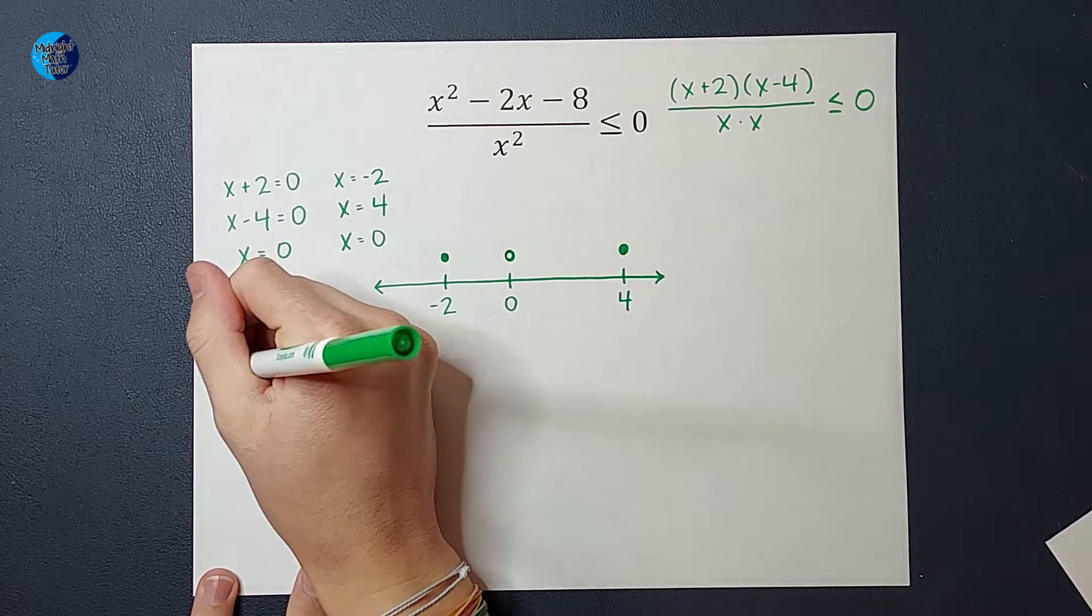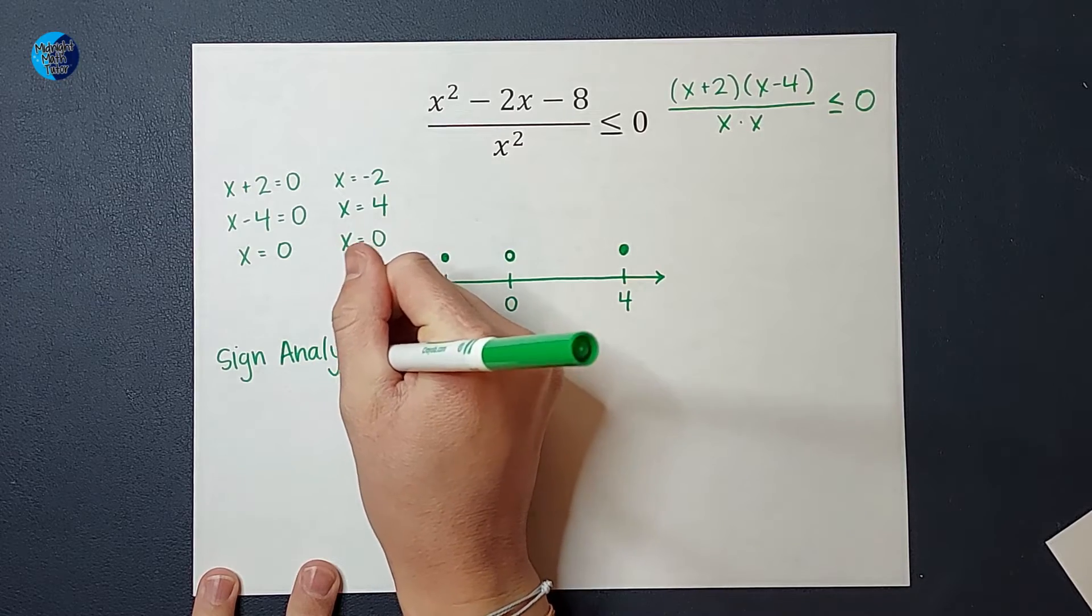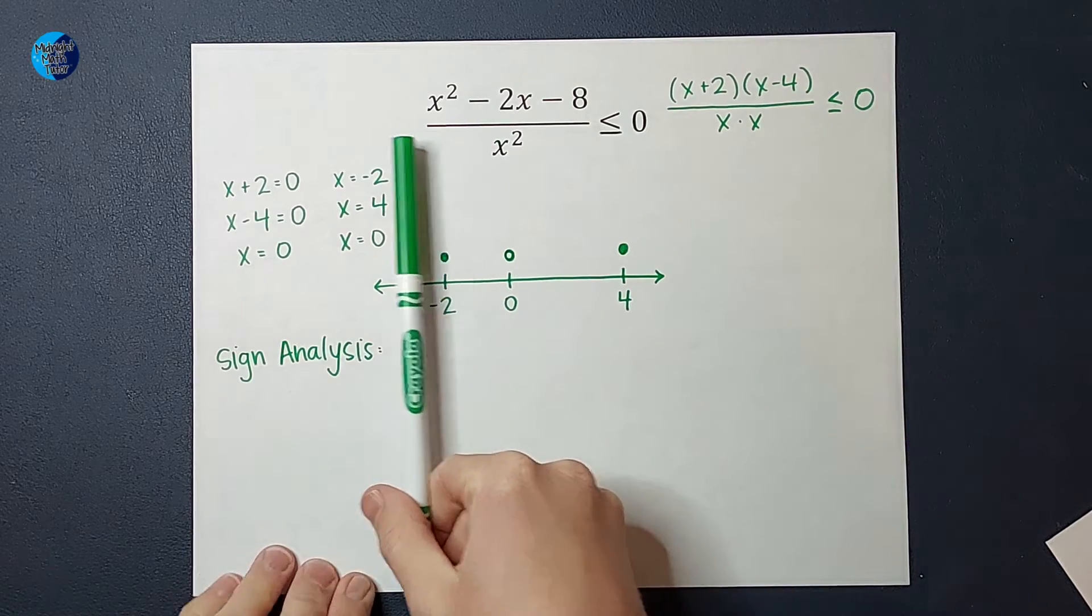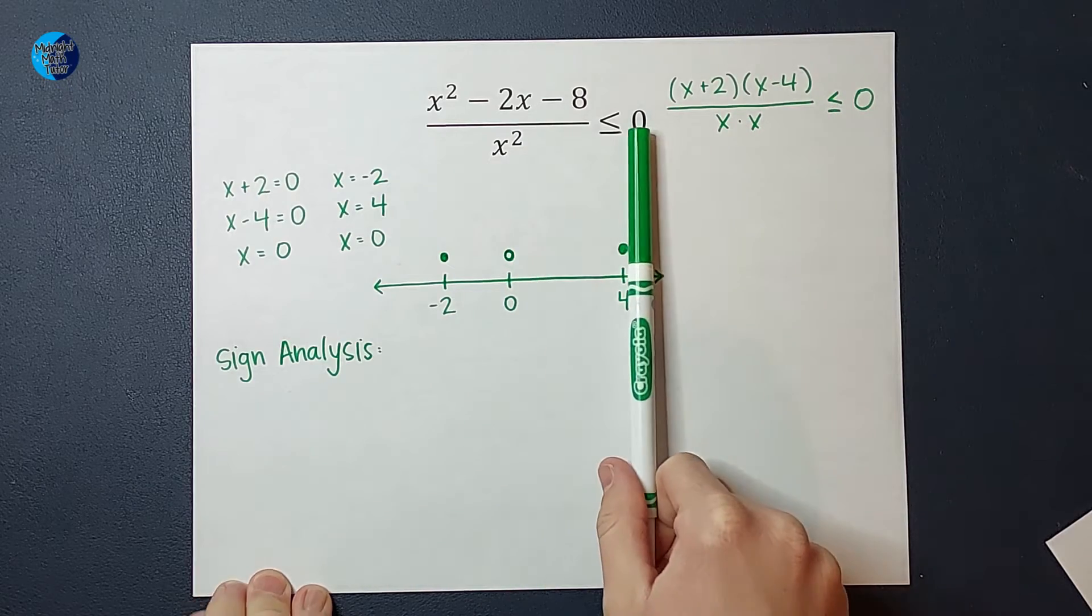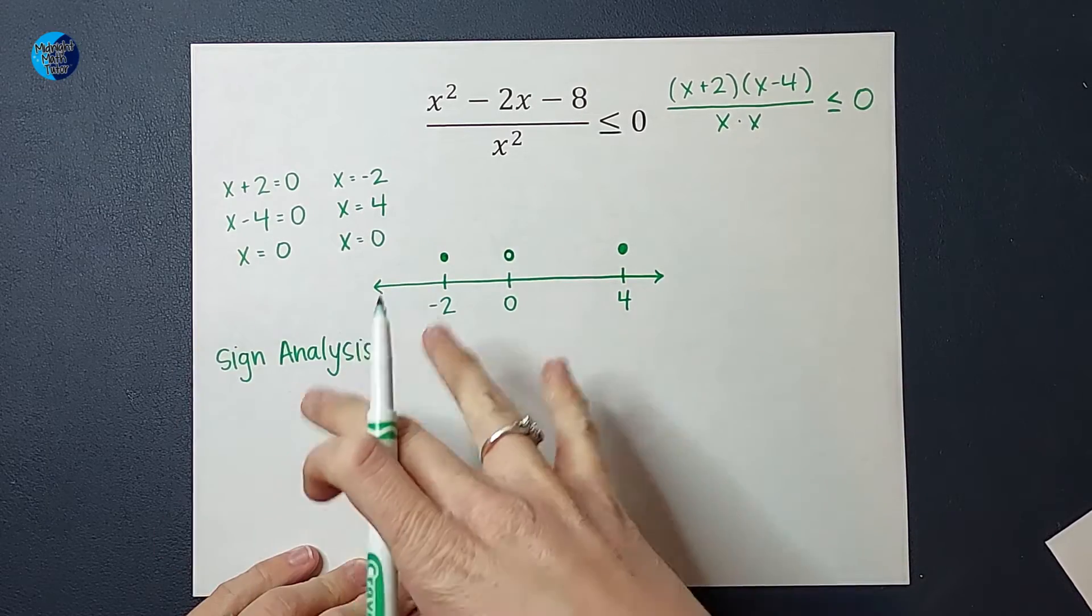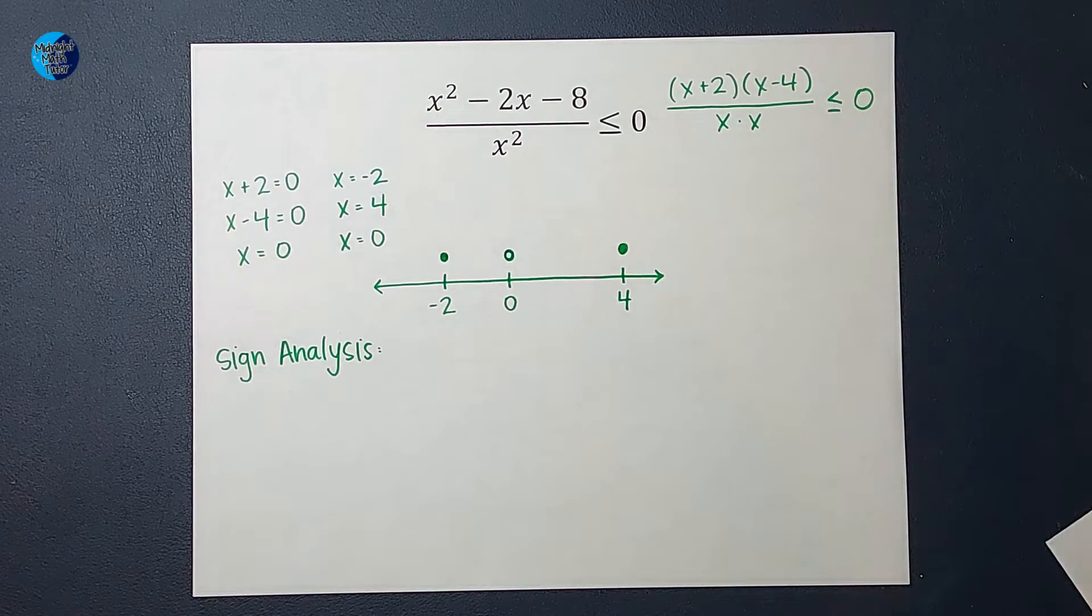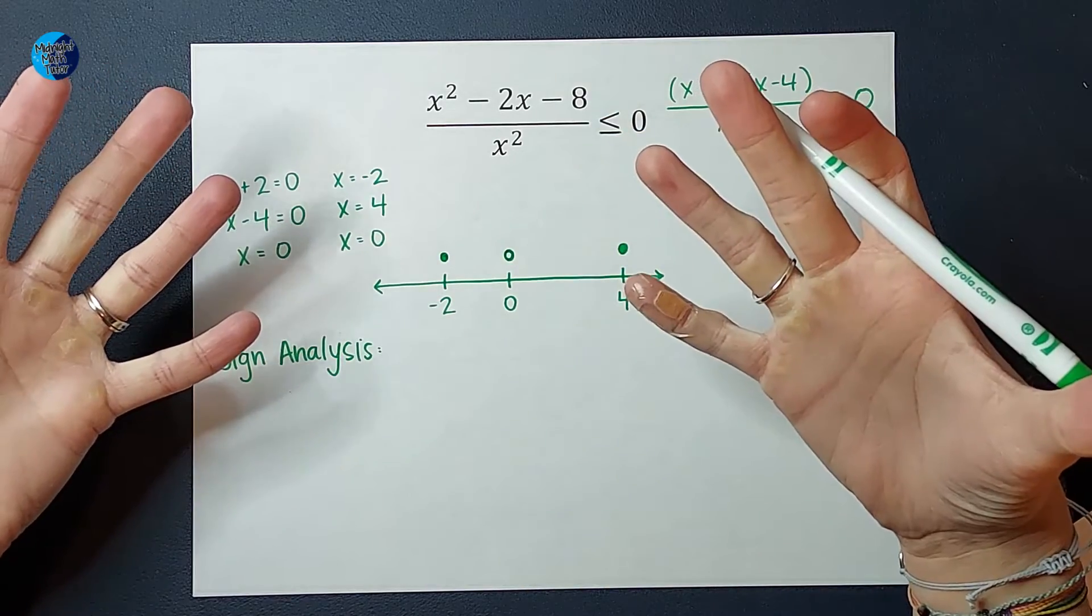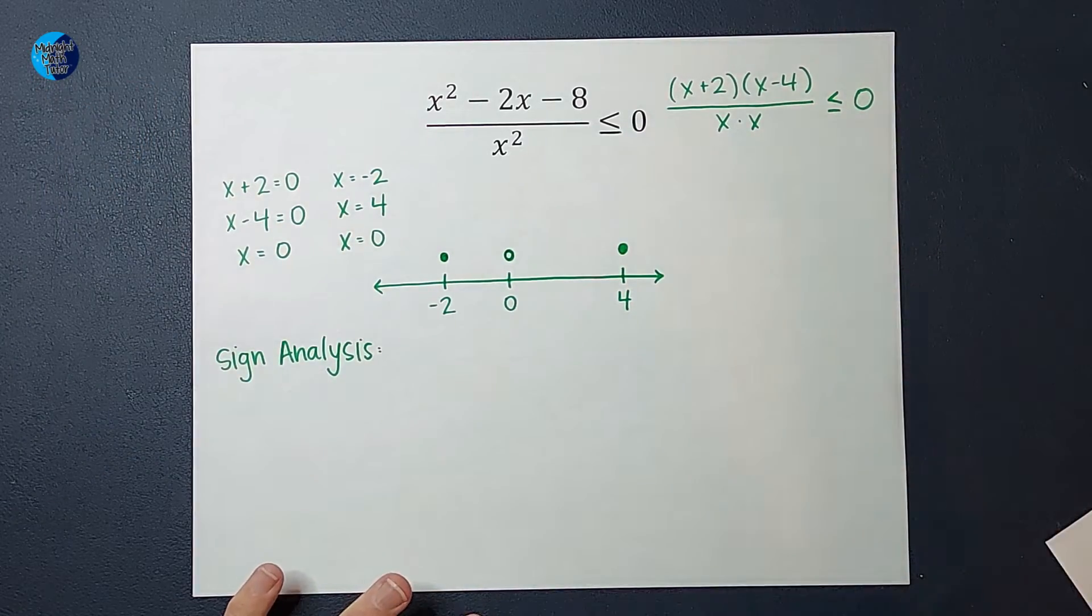From here we are going to do something that we affectionately call sign analysis. You may or may not have done this in the past. We're going to do it now. So I want to figure out for each of these regions, less than negative 2, between negative 2 and 0, between 0 and 4, and greater than 4, when I put in a number in one of those regions, is my output positive or negative? So the cool thing about sign analysis is I don't really care what my exact numerical answer is. I just care if it's positive or negative. And let me show you how that affects our problem.